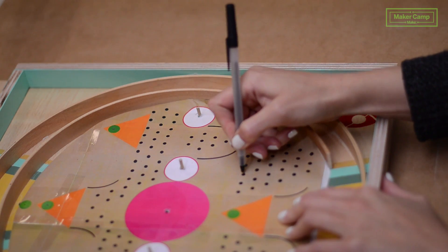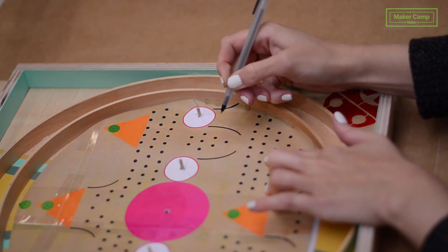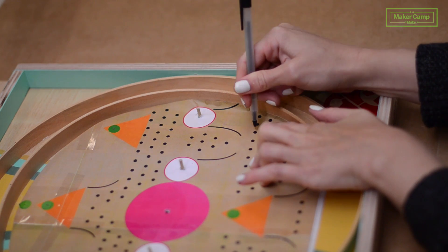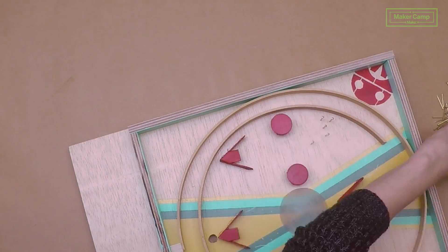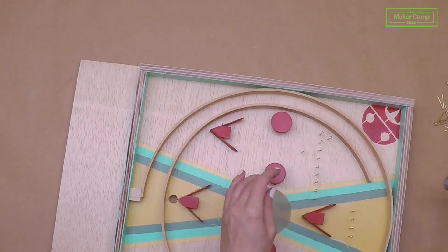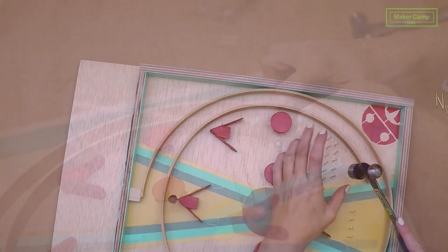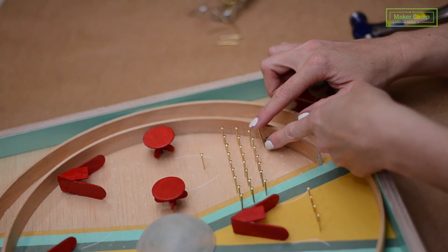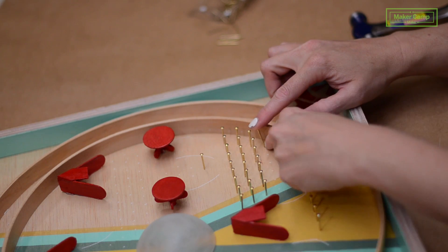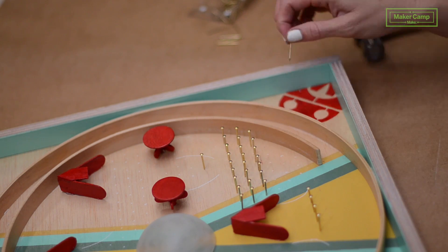Next, line up your template again. And this time, we're going to mark our nail holes and our nail curves. Nail those nails in. Make sure that you check your spacing. You don't want to just mindlessly nail your nails because it could mean that you accidentally created a ball trap.